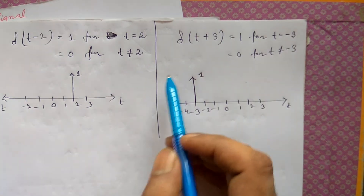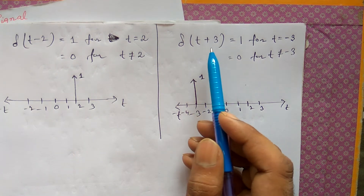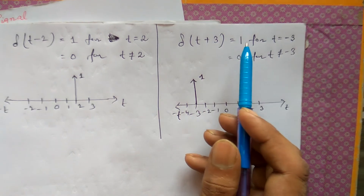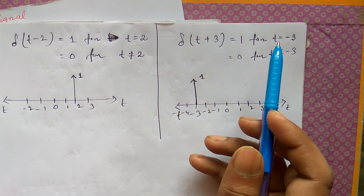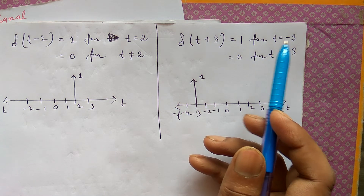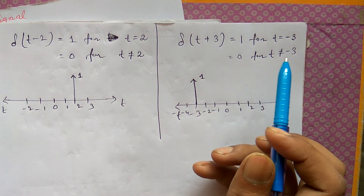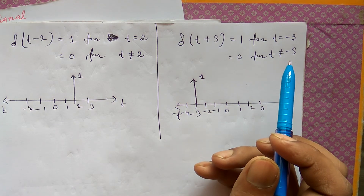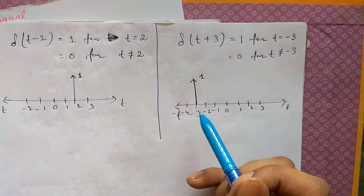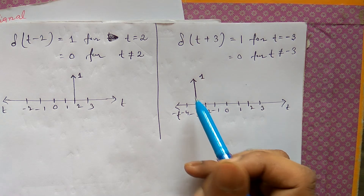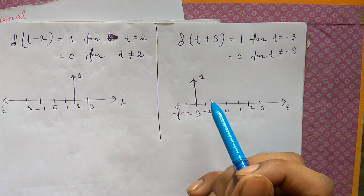Similarly, δ(t+3) will be 1 for only t equal to minus 3. When the time is minus 3 the value will be 1, and for other values of t it will be 0. Graphically, at minus 3 the value is 1 and for other values of t that is 0.